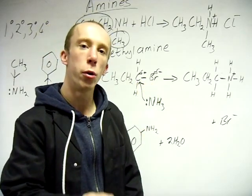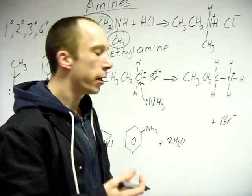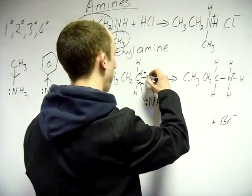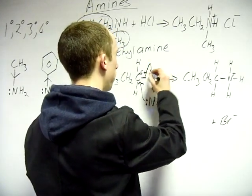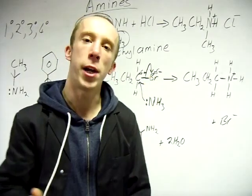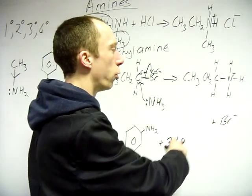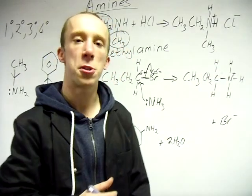So the lone pair on this nitrogen will be attracted to the delta positive carbon. So again, start at your lone pair, point where you are going. Now carbon can only have four bonds, so the weakest bond will break. So start at the bond, point towards the bromine. So the bromine will leave as bromide and we will finish with this across here.